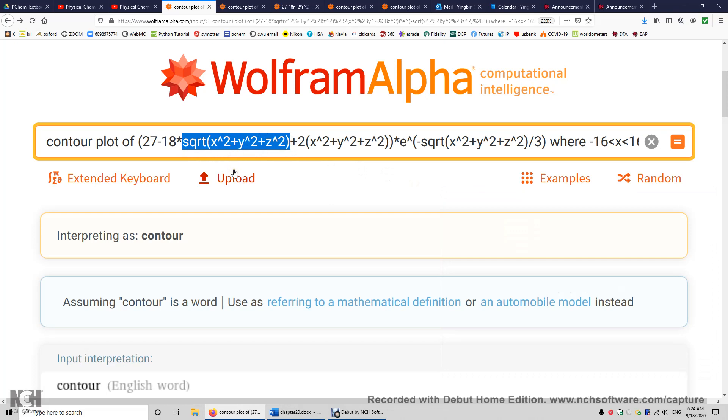r is equal to the square root of x squared plus y squared plus z squared. I also specified the range for x, y, and z. I set z to 0 to make this contour plot on the x, y plane.